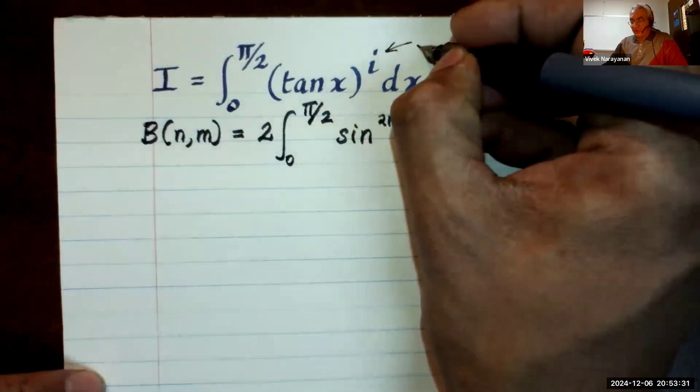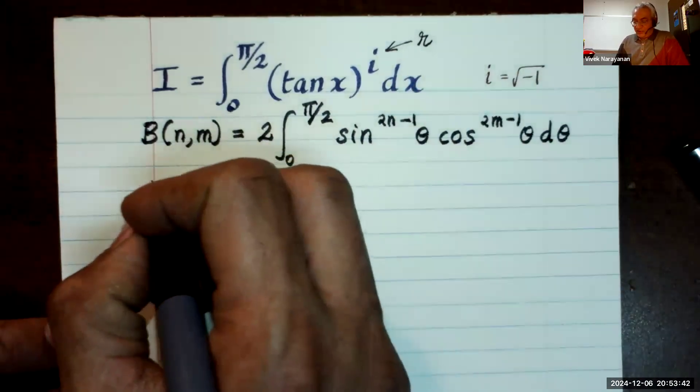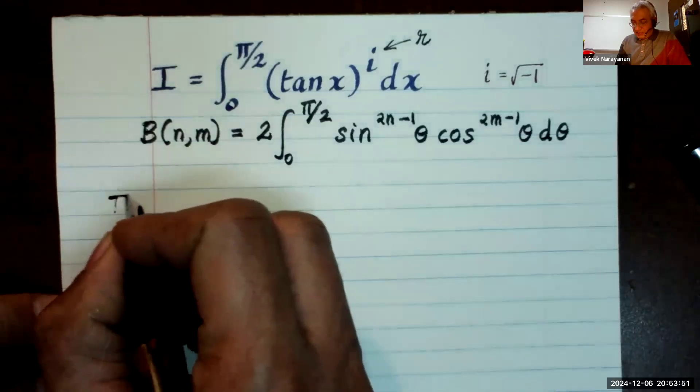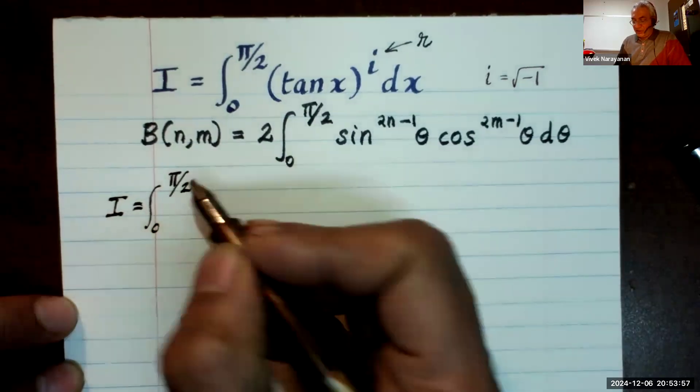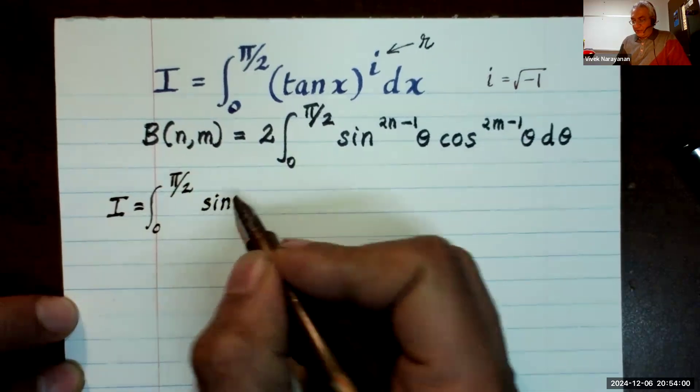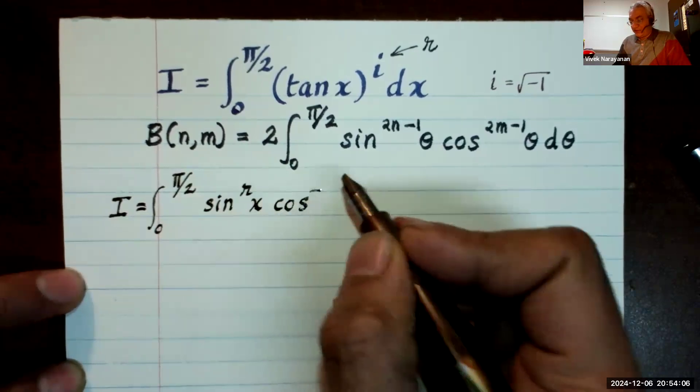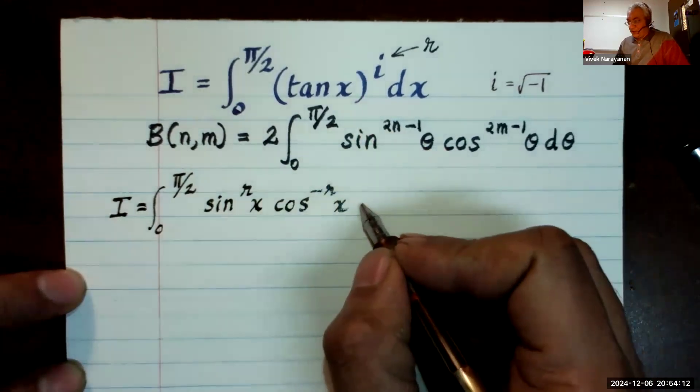For now, I'm going to call this power r and solve it in general and then put r equal to i at the end. So let me rewrite my integral in a suitable fashion. So I have my integral I equal to the integral from 0 to π/2 of sine to the power r x times cosine to the power minus r x dx. So it's sine over cosine, and I've taken cosine to the numerator.